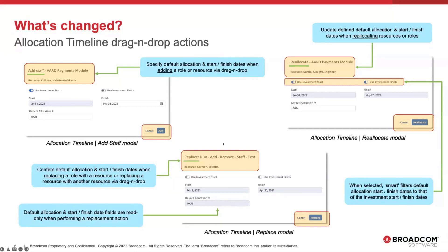Moving to the center, you've got the ability to replace — via drag-and-drop — a role with a resource, or replace a resource with a resource. In this function everything is read-only, so you're confirming start and finish dates and the default allocation. Once you've done that, you can either edit in the grid or perform a reallocate function. You simply perform a right-click action on your row, select reallocate in the drop-down menu, and you have flexibility to alter the actual start date or finish date and update the default allocation in one motion.